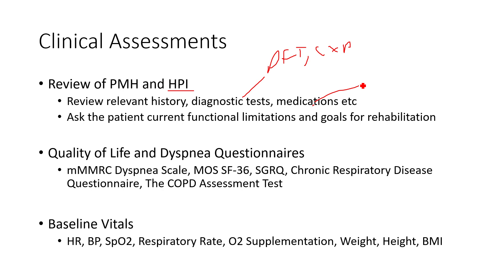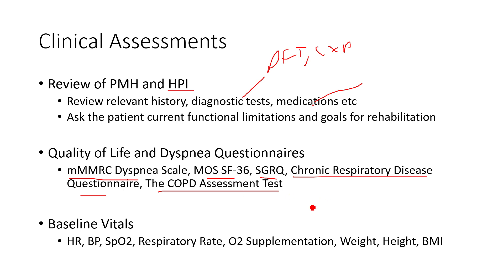I also assess quality of life using validated questionnaires. For COPD specifically, there's the MRC Dyspnea Scale, the Short Form-36, the St. George's Respiratory Questionnaire, the Chronic Respiratory Disease Questionnaire, and the COPD Assessment Test. These give an objective measure of quality of life. You can also use a simple Likert scale or VAS, but these validated questionnaires are preferred for respiratory conditions.